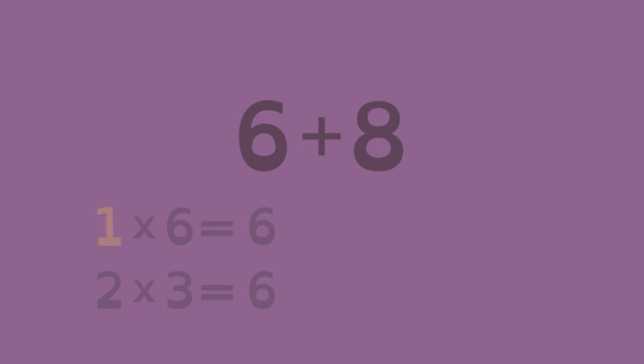So the factors of six are one, six, two, and three. Similarly, the factors of eight are one, eight, two, and four. Two is the greatest common factor of six and eight.